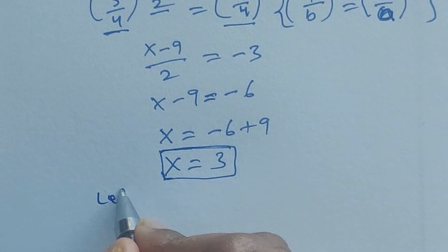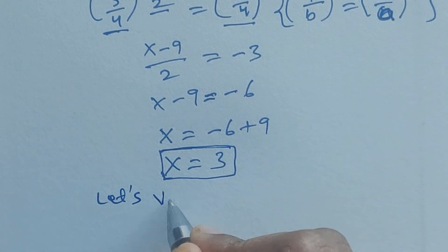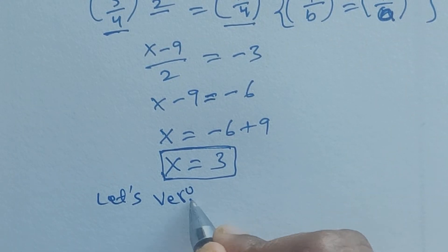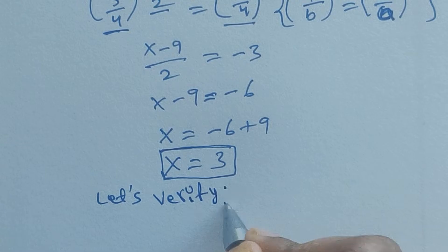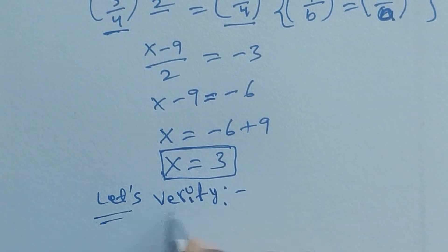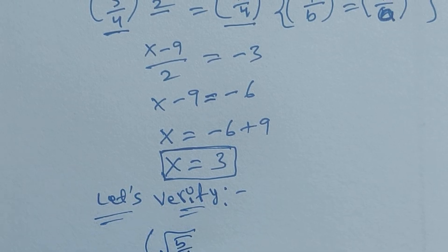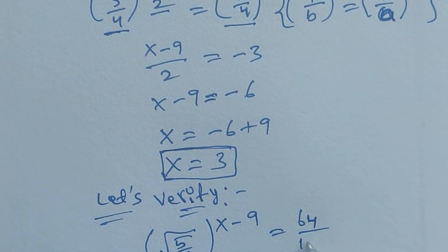Let's verify whether this is correct. We go back to the original equation: square root of (5/4) to the power of (x minus 9) equals 64 divided by 125.